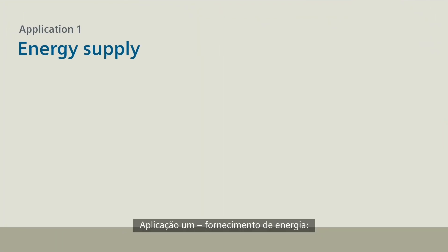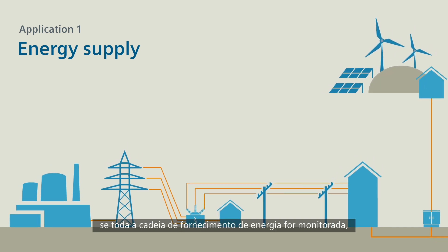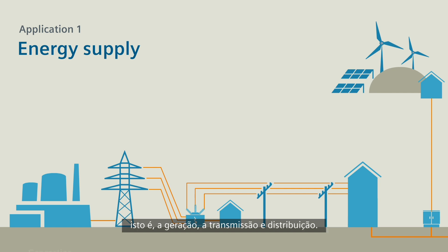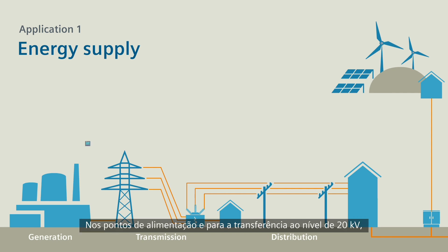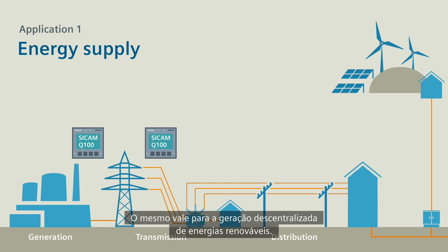Application 1: Energy Supply. An optimal grid quality can only be achieved if the entire energy supply chain is monitored — that is the generation, the transmission, and the distribution. At the feed-in points and for the transfer to the 20 kV level, use a CCAM Q100 for optimal monitoring. This is also true for the decentralized generation of renewable energies.